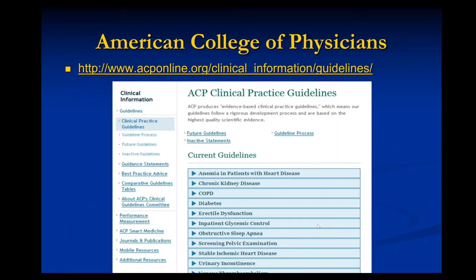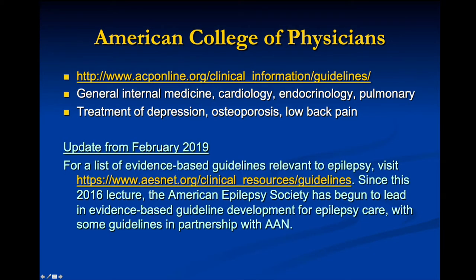The American College of Physicians also has clinical practice guidelines, though most apply to general/internal medicine and not neurology. More appropriate for neurology is the American Academy of Neurology clinical practice guidelines, which use an evidence-based review process and have published a whole series of clinical practice guidelines — this is our preferred source for evidence-based reviews in neurology.